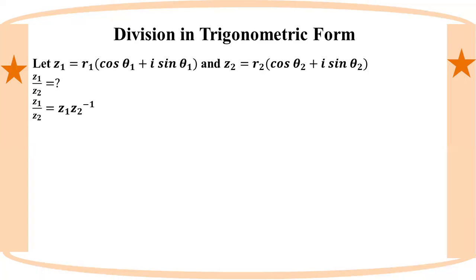You need to go to your complex number and your conjugate number. The multiplicative inverse is 1 by r, into cos(minus theta) plus i·sin(minus theta).